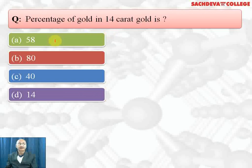18 carat gold will contain 18 divided by 24 into 100, that is 75 percent gold, and 22 carat gold contains 91.6 percent gold. 24 carat gold is 100 percent gold, so 14 carat will contain 58 percent of gold. We add copper to gold so as to make it hard so that it can be used to make ornaments.